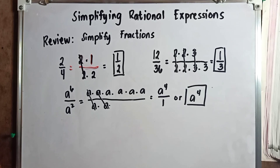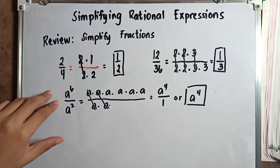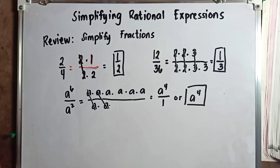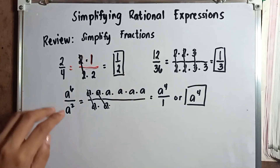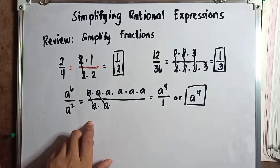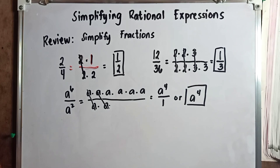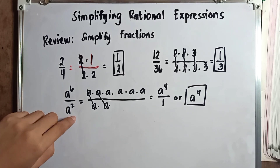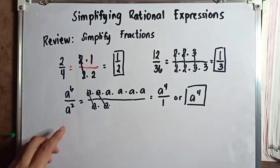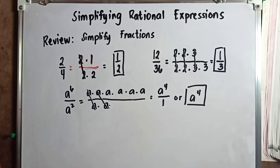One more thing to remember: once we divide variables, we need to subtract their exponents. So we don't need to find the prime factor of each variable. We can just subtract: 6 minus 2 gives us 4. Copy the variable a, and we get a to the power of 4.